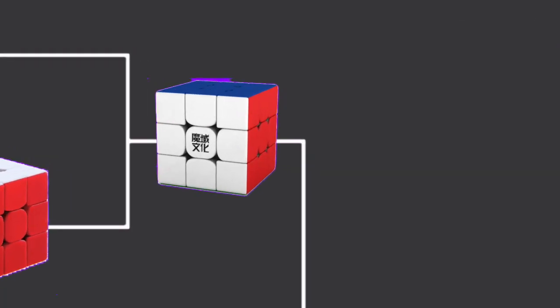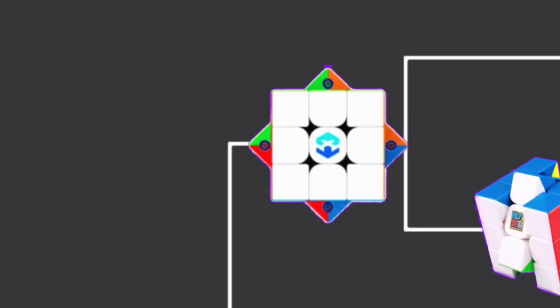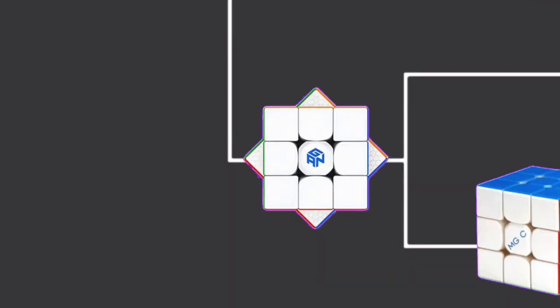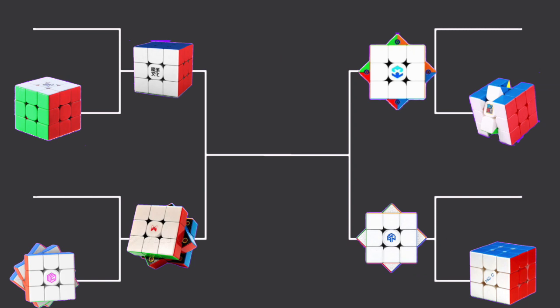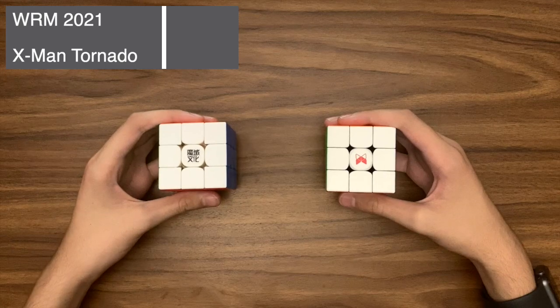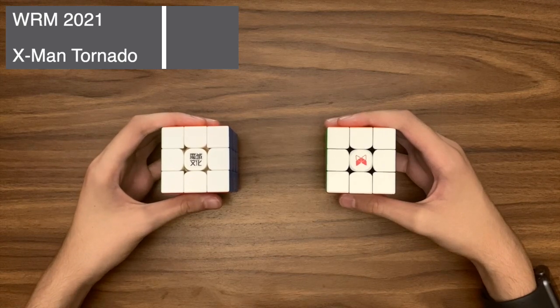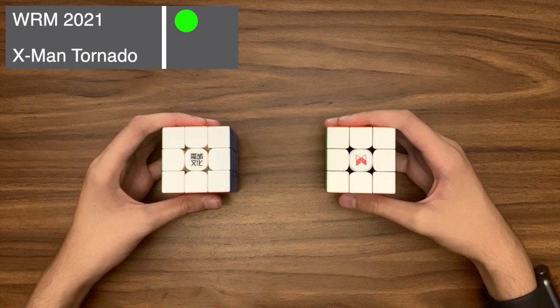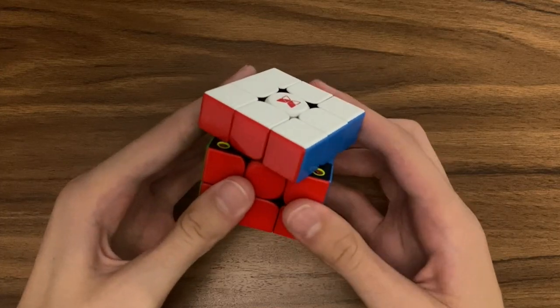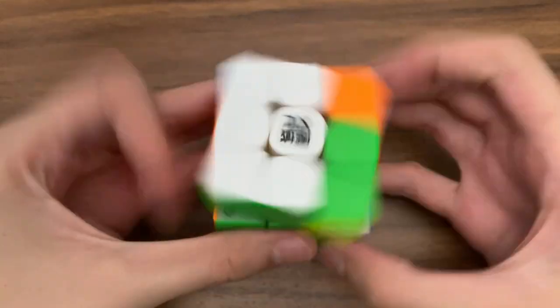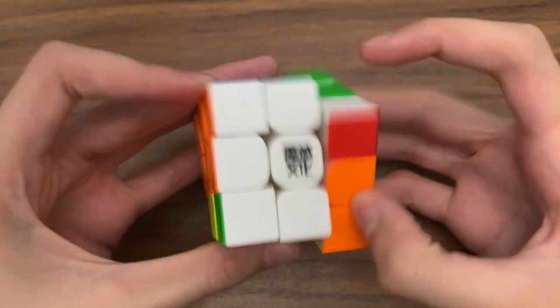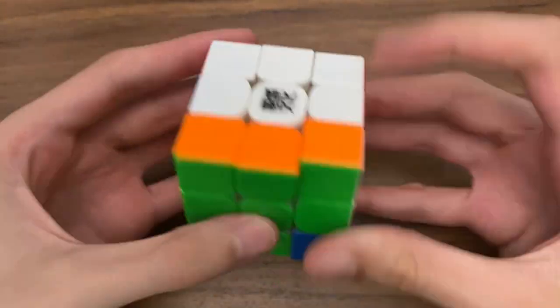In the semi-finals, we have the WRM 2021 versus the X-Man Tornado and the Maltry Tyanmar X3 versus the GAN 11M Duo. So let's start with the WRM versus Tornado. Performance: I'm going to have to say that the WRM has better turning, which is once again due to how bad the Tornado's corner cutting is. However, I do believe that the WRM has really good turning. So it would probably still win even if the Tornado had good corner cutting.